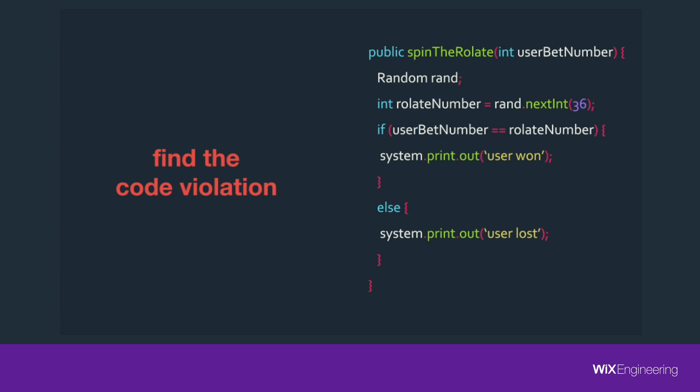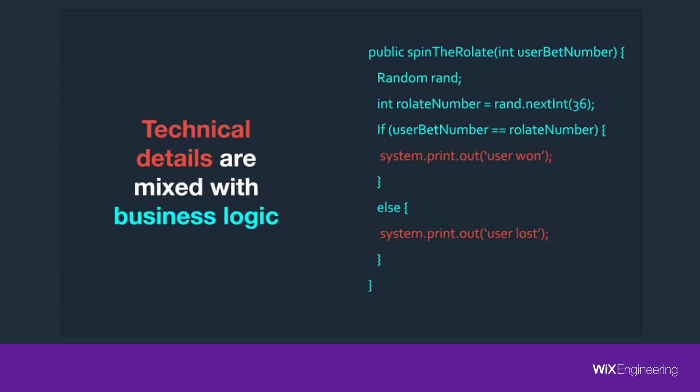Take a minute and let's see if you can find the code violation. We have here a method called 'spin the roulette' that gets a user bet number, generates a random number, and checks if the user won. If the user won, then it prints 'the user won'; if lost, it prints 'the user lost.' The code violation is the system print-out mixed inside our business logic. So let's fix that.